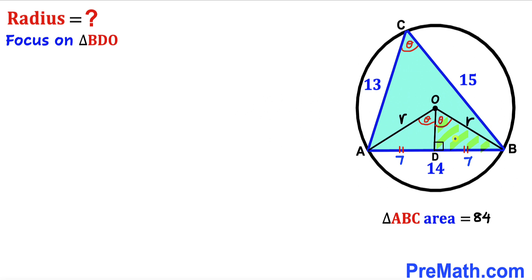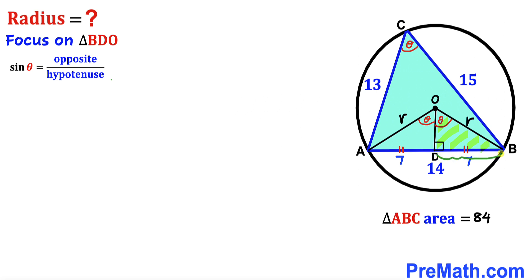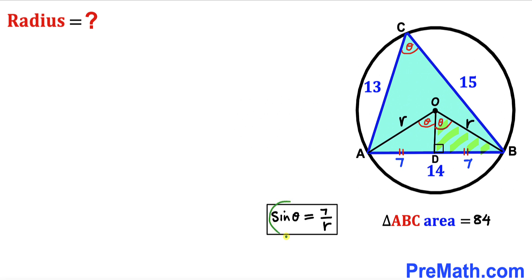Now let's focus on right triangle BDO. Recalling the trigonometric ratio: sin(theta) = opposite / hypotenuse. Here BD is the opposite side and r is the hypotenuse. Therefore sin(theta) = 7 / r.